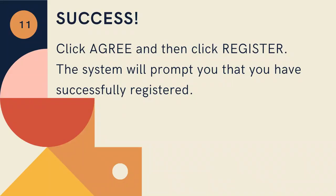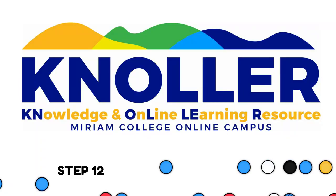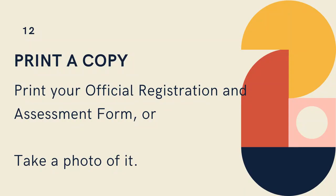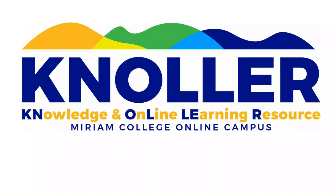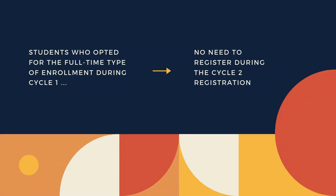Step 10: After selecting the desired mode of payment, click the Register button. Step 11: Click Agree and then click Register. The system will prompt you that you have successfully registered. Step 12: You may now print your official registration and assessment form or take a photo of it. Please note: Students who opted for the full-time type of enrollment during cycle 1 need not register during cycle 2 registration.